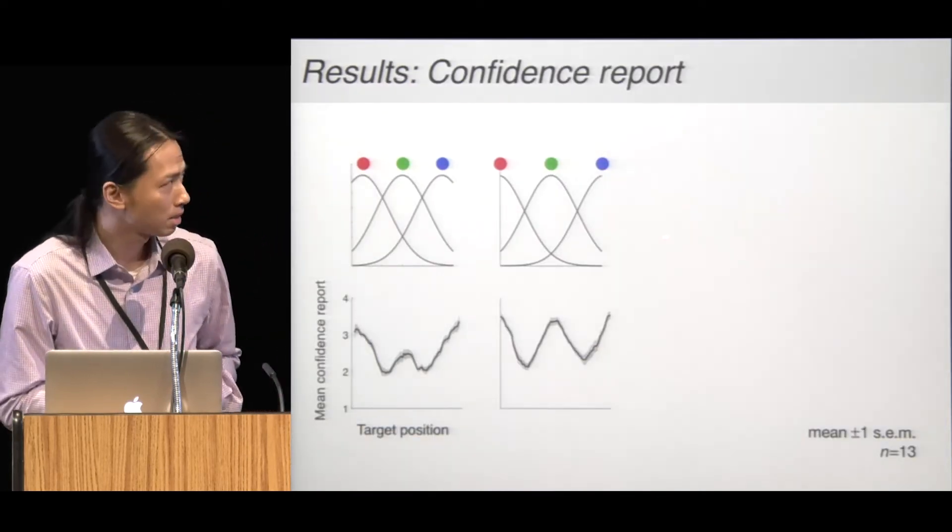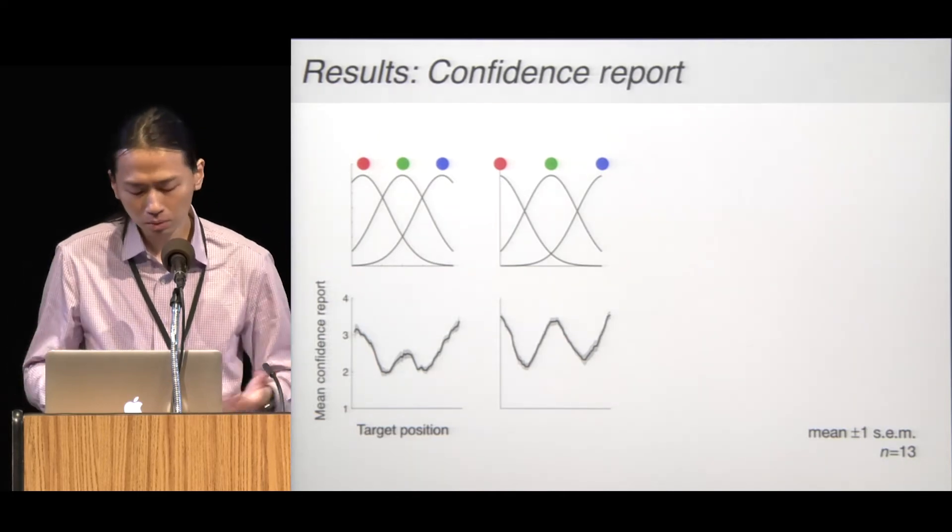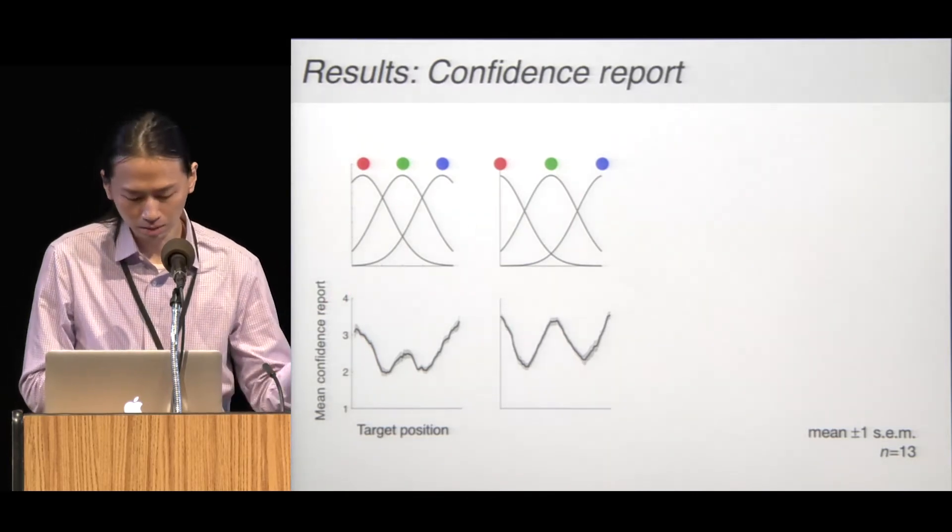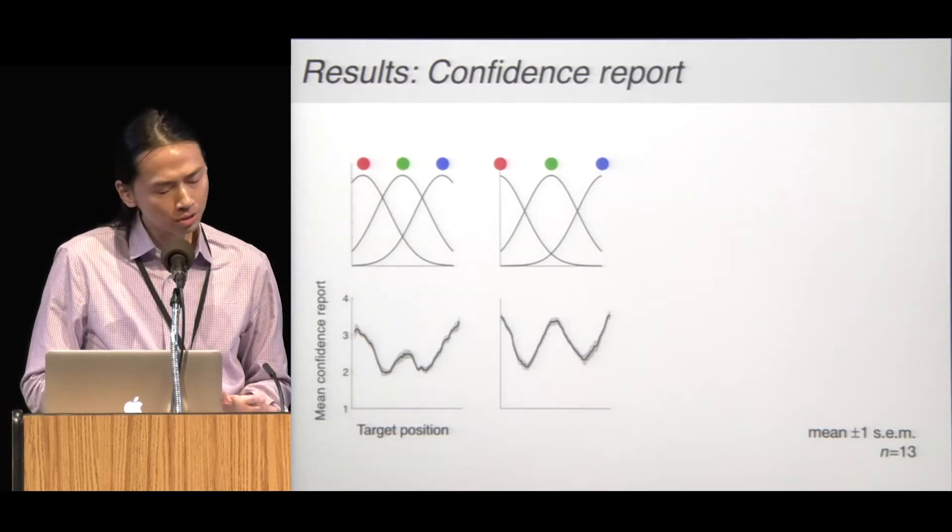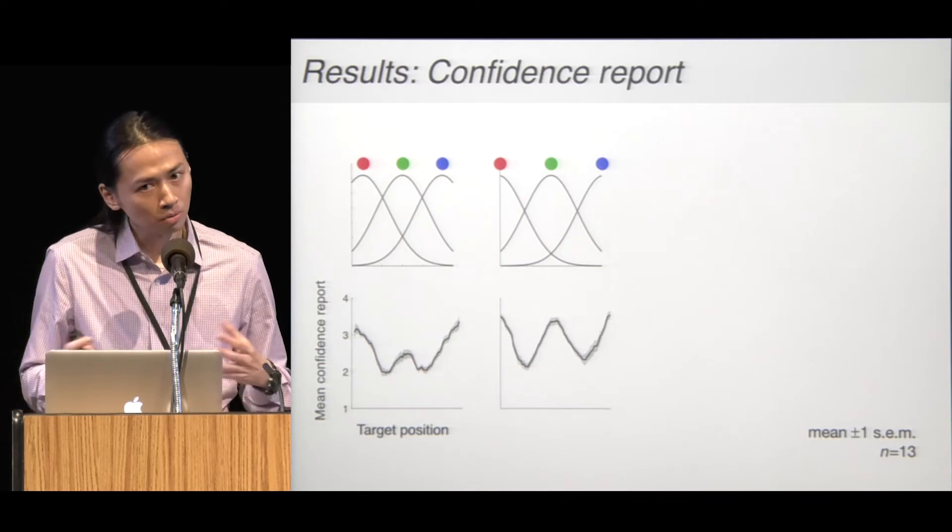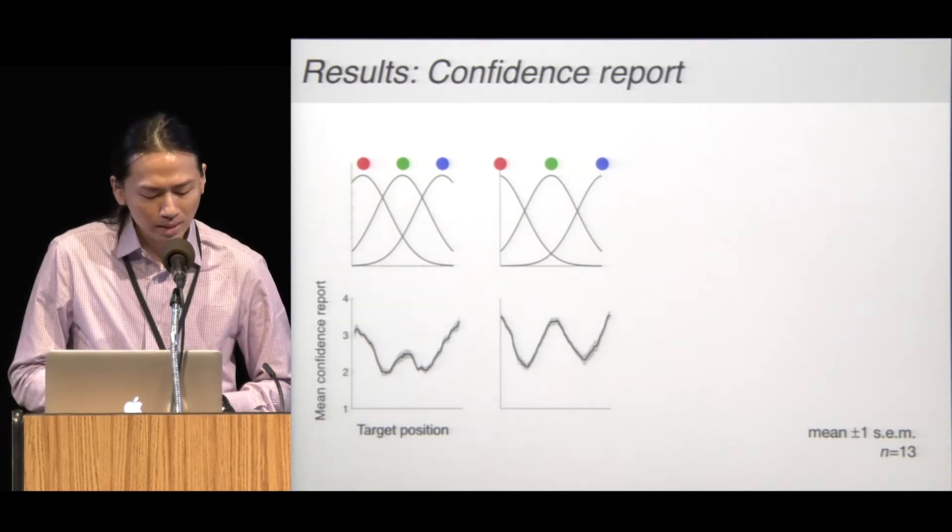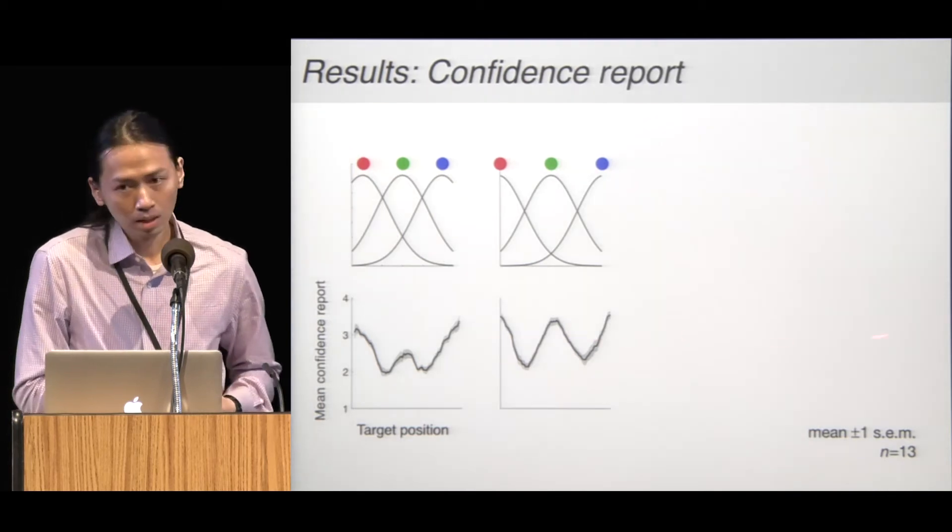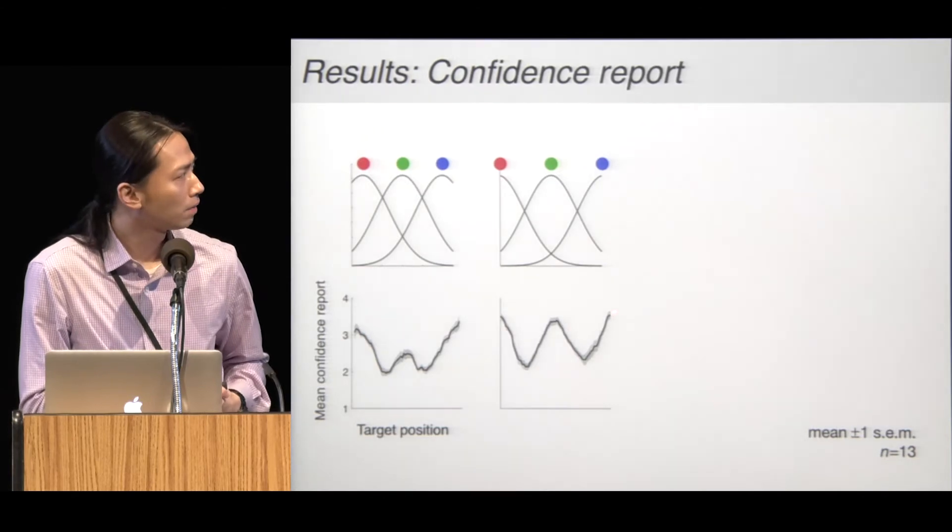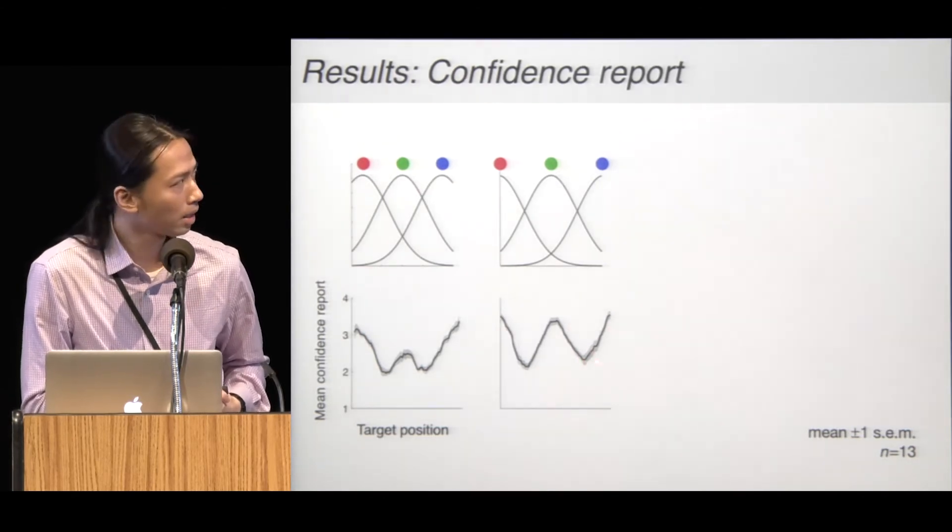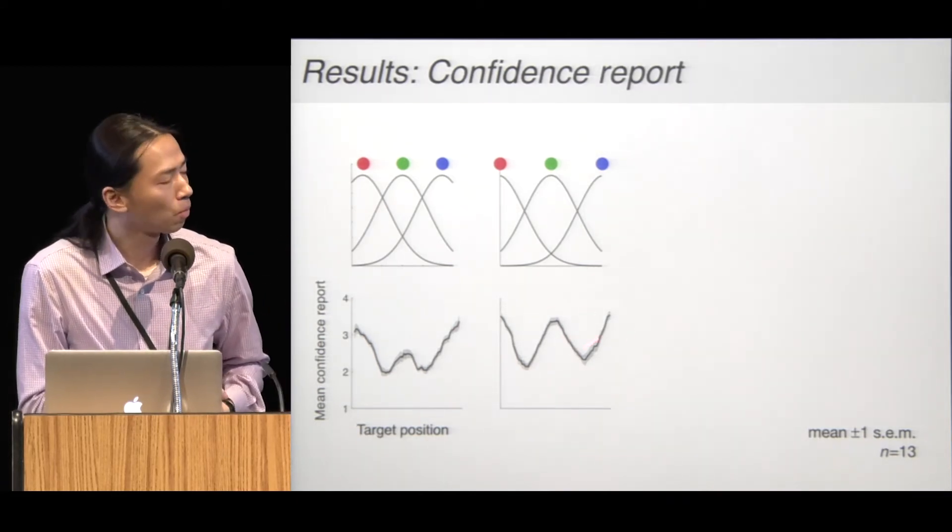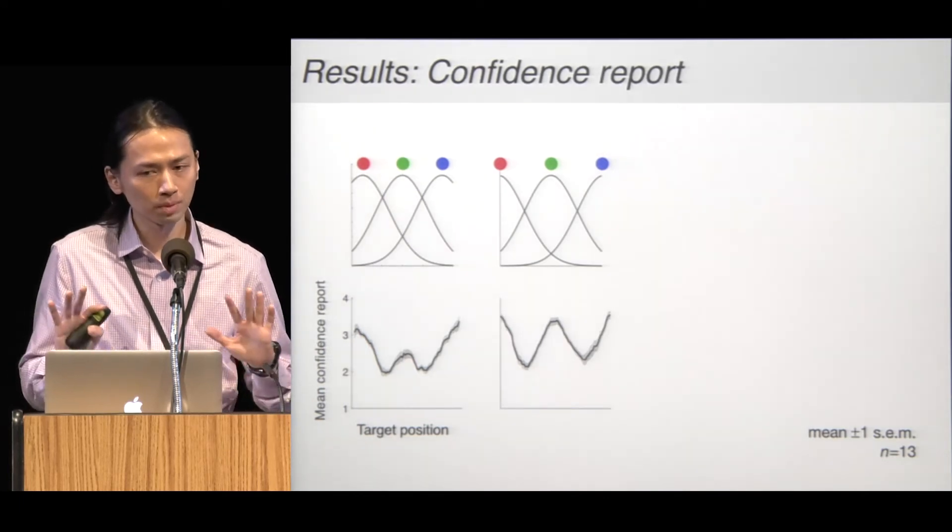Here are the data. The top row shows the stimulus distributions presented to the observers. The bottom row is the confidence report, with four representing very confident. In order to collect the data more efficiently, we constrained the target dot to be positioned in a range where we know that the models are more distinguishable. When the three groups are equally spaced, confidence is very high when the target is at the far left or far right. Confidence decreases moving toward the center, and then it goes up higher again when it's at the center of the middle group. This pattern is more pronounced when the three distributions are spaced far apart.